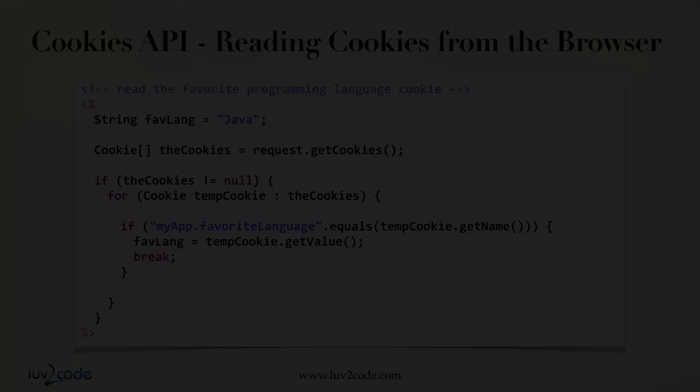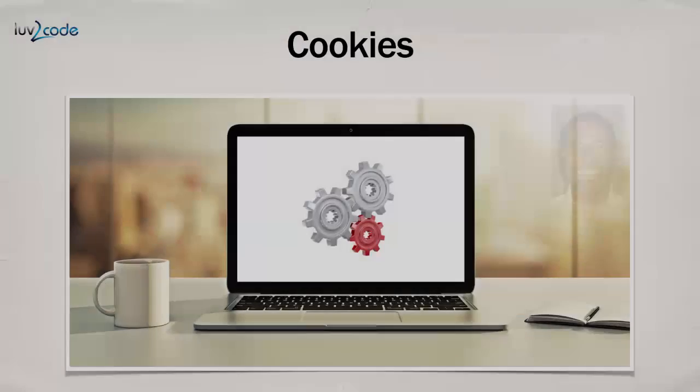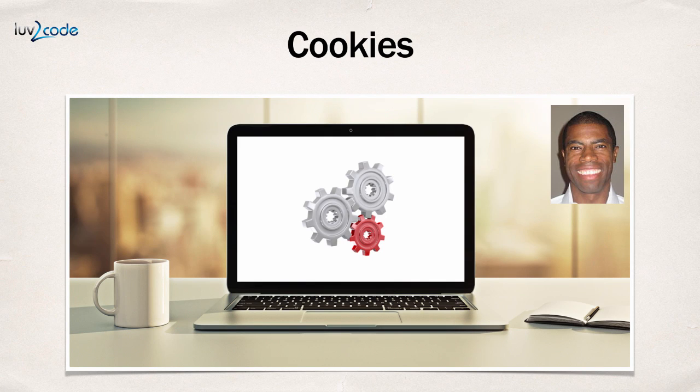This has been a high-level overview with some code snippets. In the next video, we'll actually write some real code and pull together a working example with JSP pages for reading cookies, setting cookies, and building custom pages. I'll pull this all together for you so you'll see a nice working example. See you in the next video.